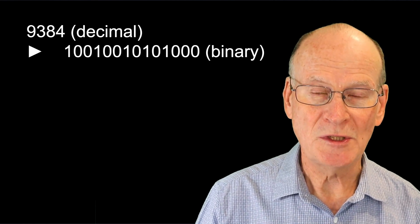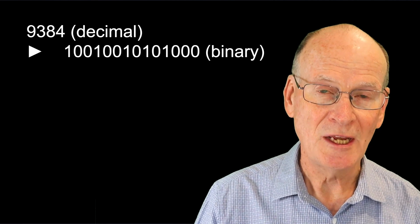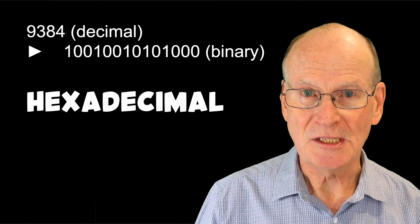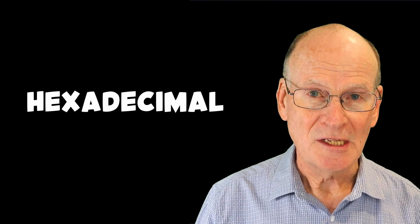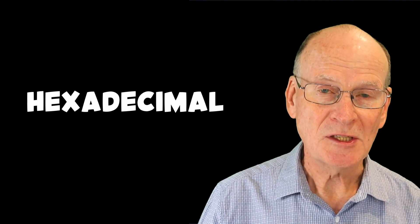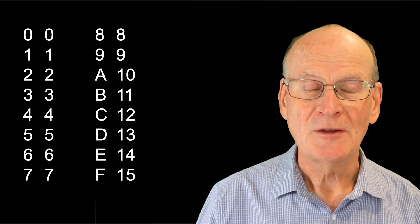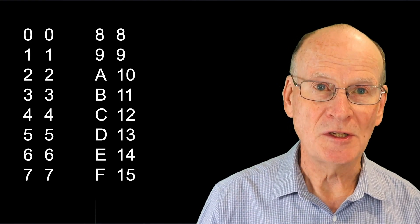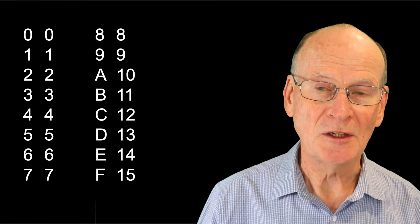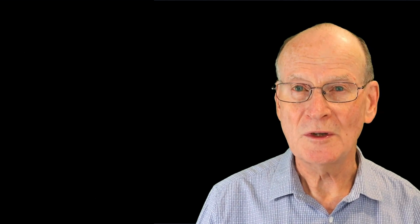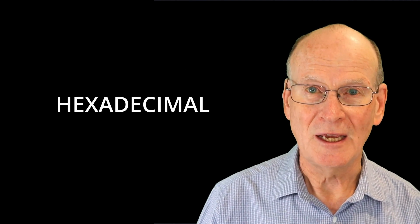So let me explain this with an example. The most common base used in computer systems when showing numbers to humans is base 16, usually called hexadecimal. For hexadecimal or base 16, we need 16 different symbols. So we use 0 to 9 and A to F. Incidentally, the word hexadecimal comes from the Greek hex for 6 and the Latin deci for 10, hexadecimal.